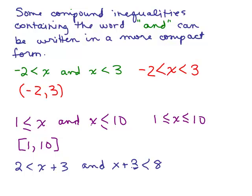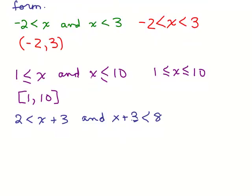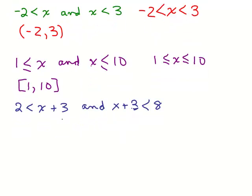How about this next one: 2 is less than x plus 3 and x plus 3 is less than 8. Notice that we've got the same expression on both sides — it has to be x plus 3 and x plus 3. So x plus 3 is bigger than 2 and at the same time less than 8, so this can be written as 2 is less than x plus 3 is less than 8. This is a more compact way of writing and solving this compound inequality.